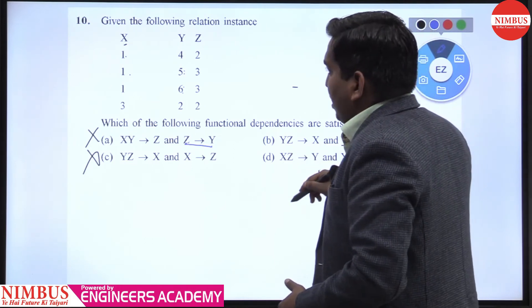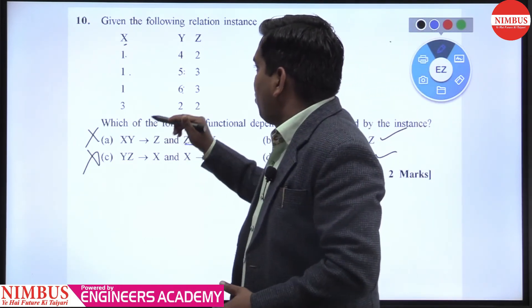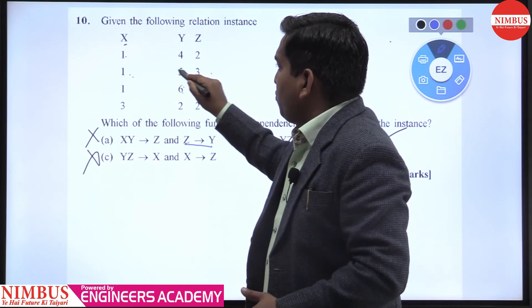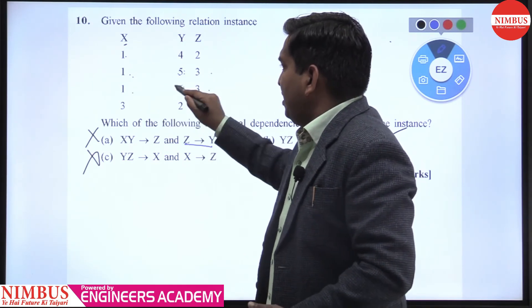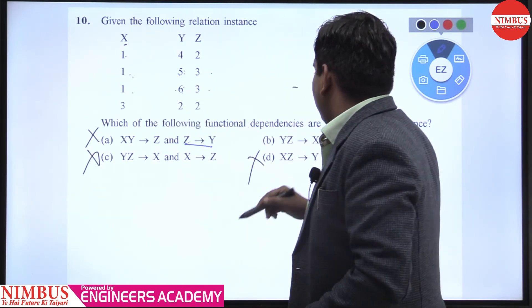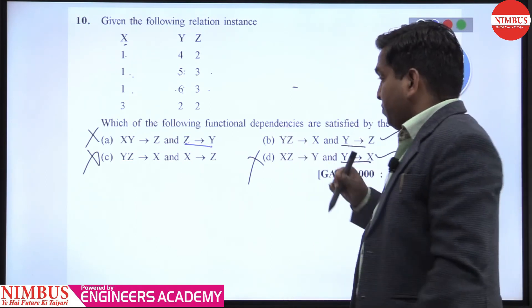Now we will check XZ→Y. XZ→Y means: 1,3 gives 5, again 1,3 gives 6. That is not valid. Now again we filter option B also.